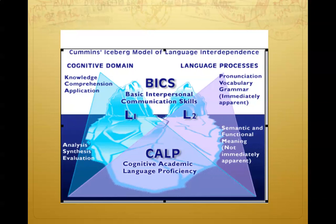To think about it even further, what we don't see under the water can be different for different students. For example, you might have two ELL students in your classroom from the same country and the same age, but the first student has a well-developed CALP in the native language and the second student does not. These students will have different needs. Student one already has the background and concept — he will just need to learn English. The other will need lots of background information, scaffolding, and instruction to learn both the concept and the English.